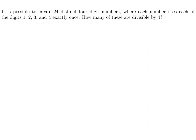It is possible to create 24 distinct four digit numbers, where each number uses each of the digits 1, 2, 3, and 4 exactly once. How many of these are divisible by 4? So we have a four digit number. For the first digit, we have four possible choices. Then the next number, only three possible choices because they're distinct. Similarly, for the third choice, only two. For the fourth choice, only one number remains. Therefore, there's 24 possible ways of creating these numbers. And they already told you that, 24 right there.